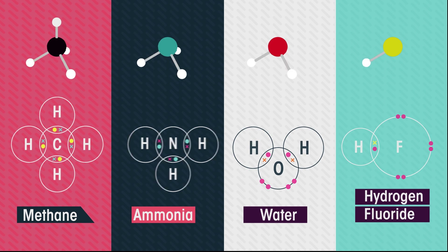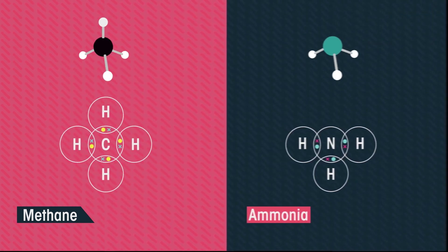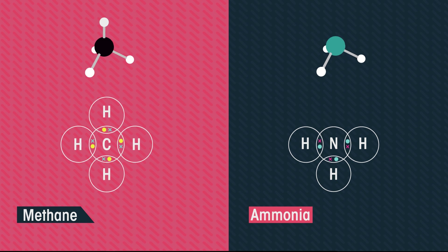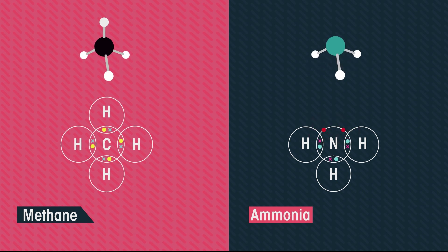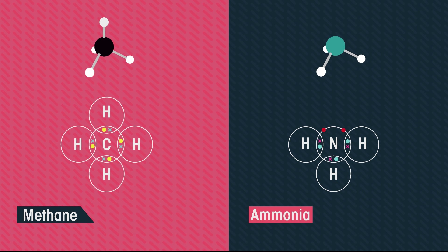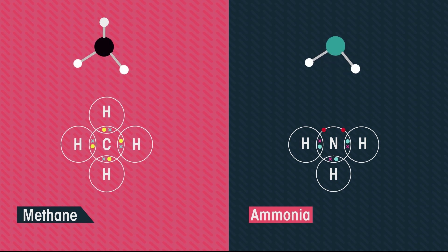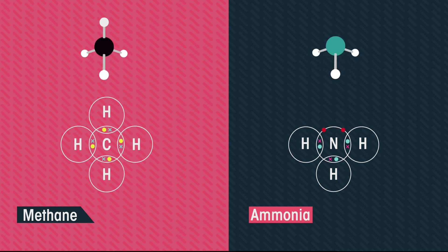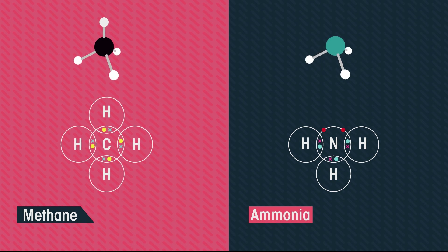Let's look at these shapes more closely. Ammonia has two electrons — called a lone pair of electrons — occupying the fourth position. These electrons take up space; we can't pretend they're not there. In fact, because electrons are negatively charged, lone pairs repel bonds even more strongly than bonds repel each other. This makes ammonia less symmetric than methane.